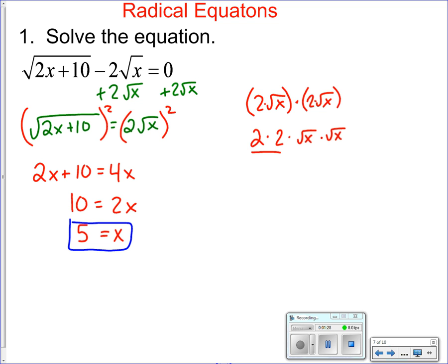Plug 5 back in for x, so I have √(2×5+10) - 2√5. You have to plug it back into the original, not one that you've manipulated. So I have √20 - 2√5.